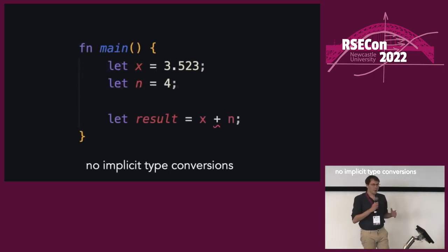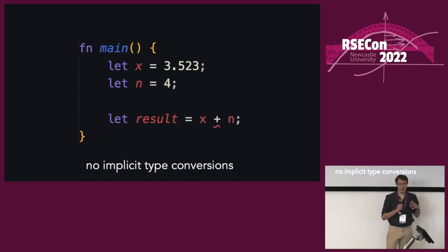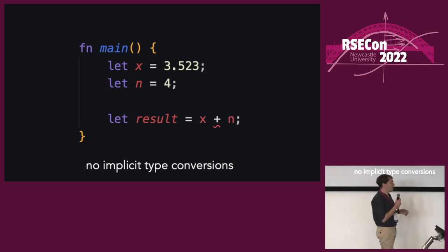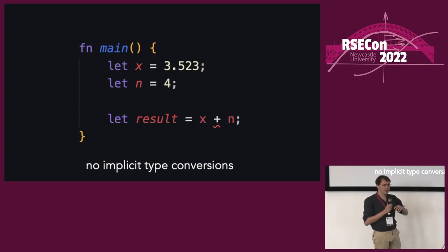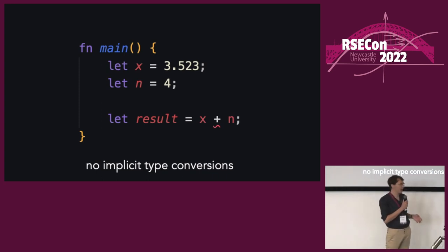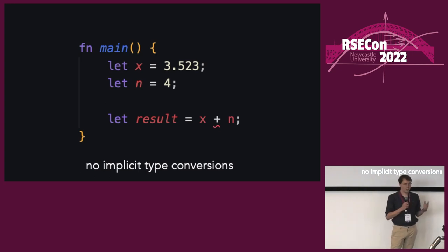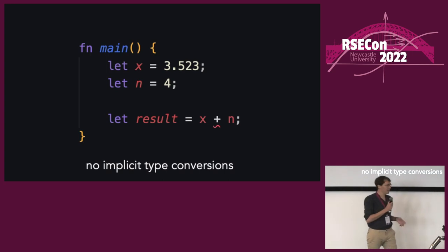The reason Rust was developed was to try and be equivalent in performance to languages like C and C++, but to try and evolve past some of the pain points that those languages have always had and are kind of fundamental. It tries to eliminate lots of different classes of bugs, such as implicit type conversions, which can lead to unexpected errors.